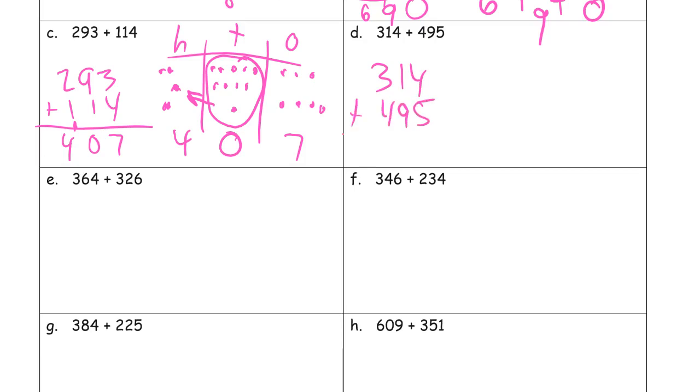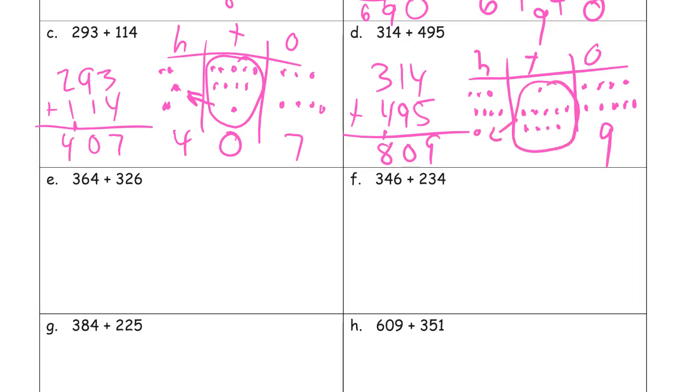314, 495. 9. 809. With the chip model, 3 hundreds, 9 tens for 95, and 5 more ones. I don't have to compose a 10 here. That's just 9 when you count it. Look at all these tens here. You have 10 tens. So I have to compose 100. When I count everything, I don't have any tens because I composed them all into 100. And now I count my hundreds and I have 8 hundreds.